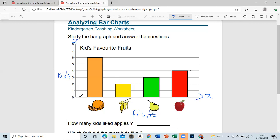So on the x-axis we have fruits, and on the y-axis we have the number of kids.